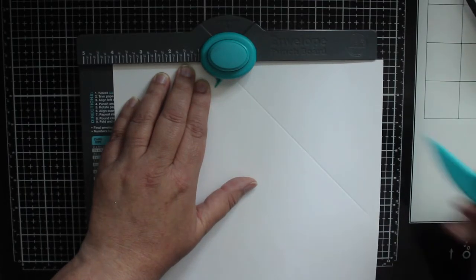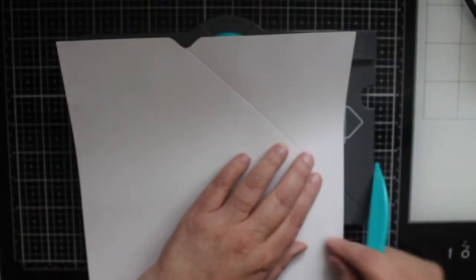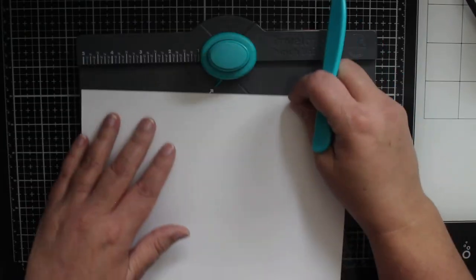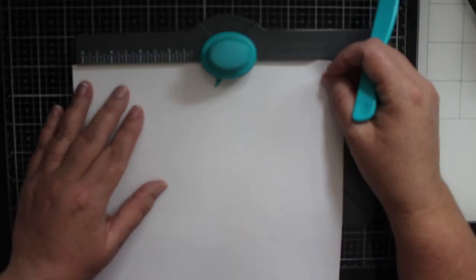A larger piece of paper like this one I need to score my paper as far as I can and then fold carefully or scoot it so I can finish the score line.